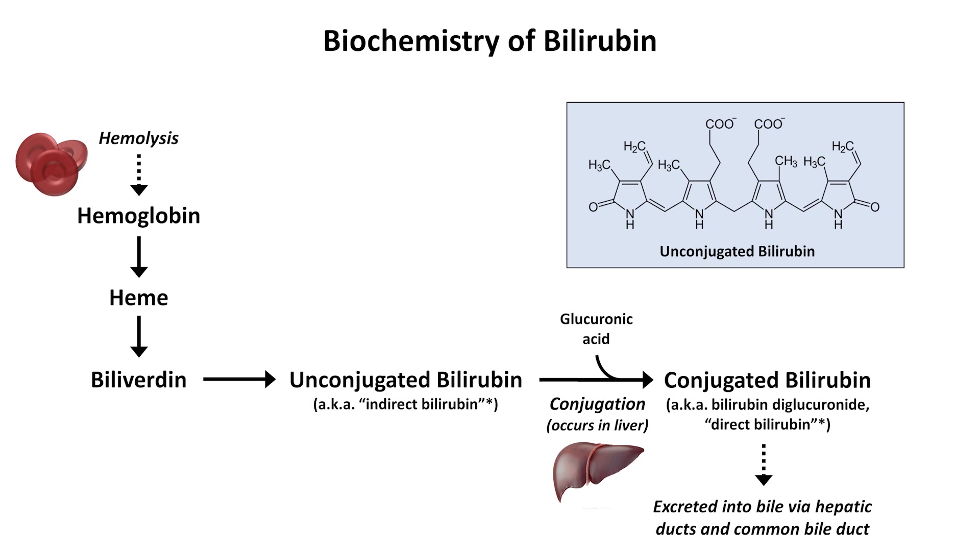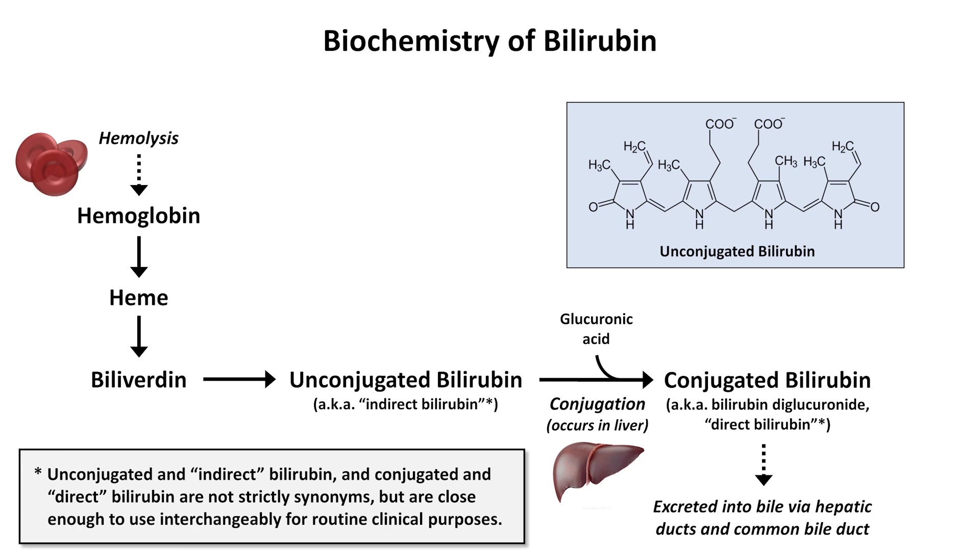Unconjugated bilirubin is often called indirect bilirubin, and conjugated bilirubin called direct bilirubin. These are not strictly synonyms, since the direct fraction includes both conjugated bilirubin as well as unconjugated bilirubin that is bound to albumin. However, they are quantitatively close enough to use interchangeably for routine clinical purposes.